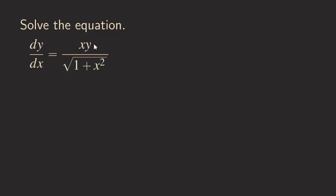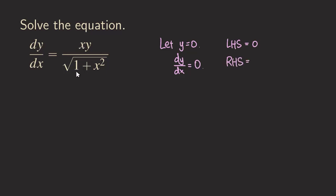But before doing that, as you can see here, there is a y in the numerator. If we let y be 0, let's see what happens when y is equal to 0. What happens is that dy over dx — if you take the derivative of 0, you are still going to get 0. So if you just plug those into the equation, you get dy over dx is equal to 0, so the left-hand side equals 0. And then the right-hand side is x times y over the square root of 1 plus x squared. So we get x times 0, divided by the square root of 1 plus x squared, and 0 times anything is 0. So both the left-hand side and the right-hand side are equal to 0.